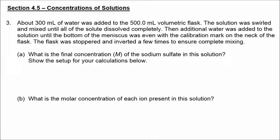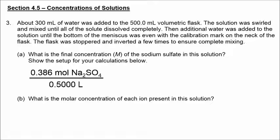The concentration of sodium sulfate would be 0.386 moles divided by a total volume of 0.5000 liters. A volumetric flask is very precise, so we have four significant figures in our volume. We're still going to round off our answer to three significant figures because we were limited by the original number we had for mass.